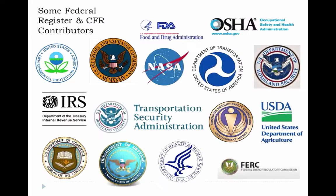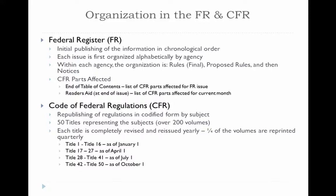Before getting into the rules, this slide indicates some of the agencies that are responsible for creating rules or regulations and enforcing them. Certainly this is not all of them, but it gives a visual idea of what the two sources contain through these particular agencies. So let's get right into the organization of the Federal Register and the Code of Federal Regulations — this is the meat of the session.